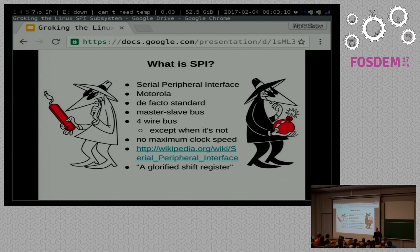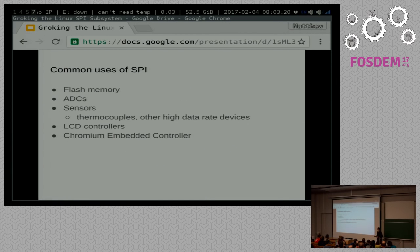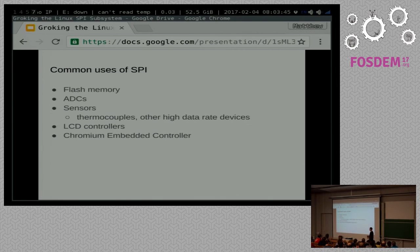One of the jokes about spy is that everybody makes a big deal about it, but at the end of the day, it's just a glorified shift register. So, common uses: pretty much everywhere, but just to highlight a few, you have things like flash memory. You often find serial flash devices. Why? Low pin count, right? Same reason you see I2C EEPROMs for your non-volatile storage. Huge advantage with that low pin count in embedded systems.